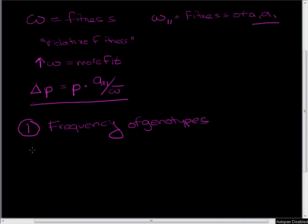And then I want to look at the allele frequency at time equals 1. And this allele frequency is going to be what we get from delta P.